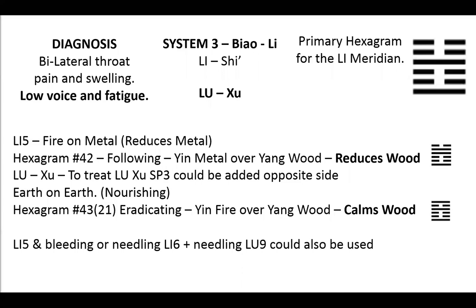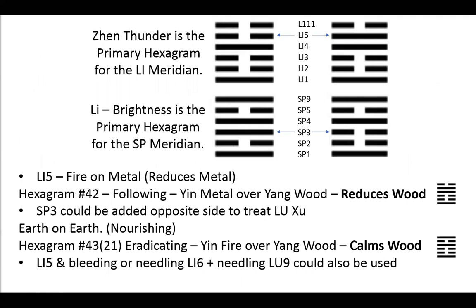For those who already work with hexagrams, we can start to include these in our analysis of these points. I'm not going to go into how you create hexagrams from needling points in depth, as this is just a preliminary introduction — we'll cover that in the Advanced Balance Method group. Basically, Large Intestine 5 — when you use the five element points plus the Yang Yuan — makes up a line on the hexagram. Large Intestine 5 is the first, second, third, fourth, fifth line. This hexagram is Zhen/Thunder, the primary hexagram for the large intestine meridian.